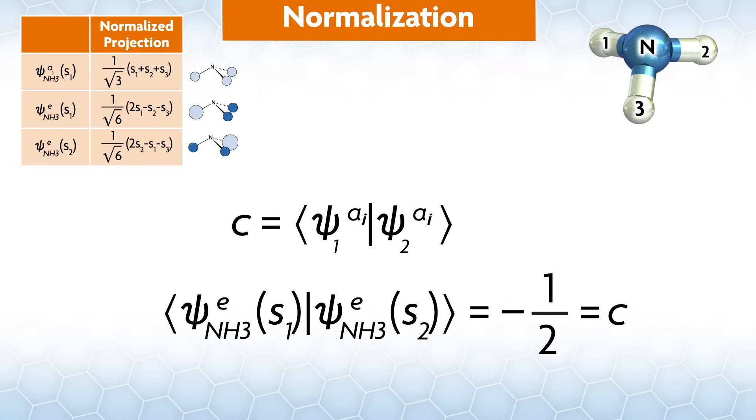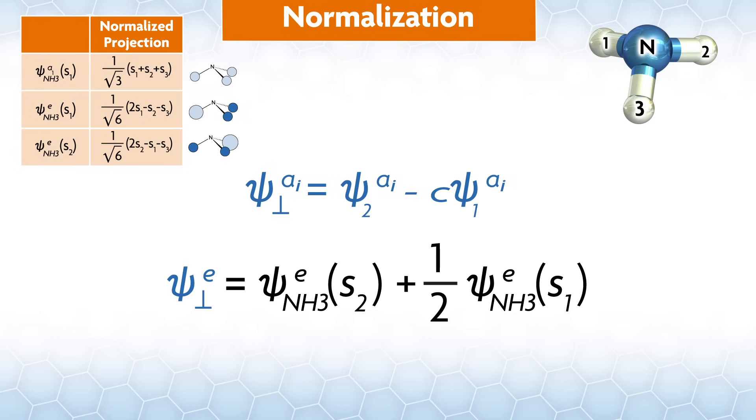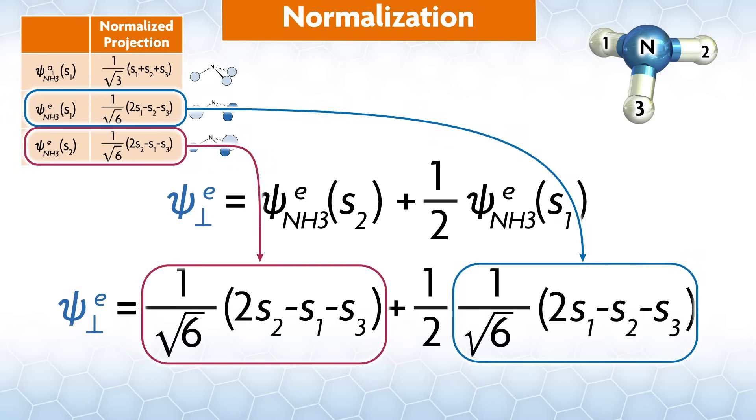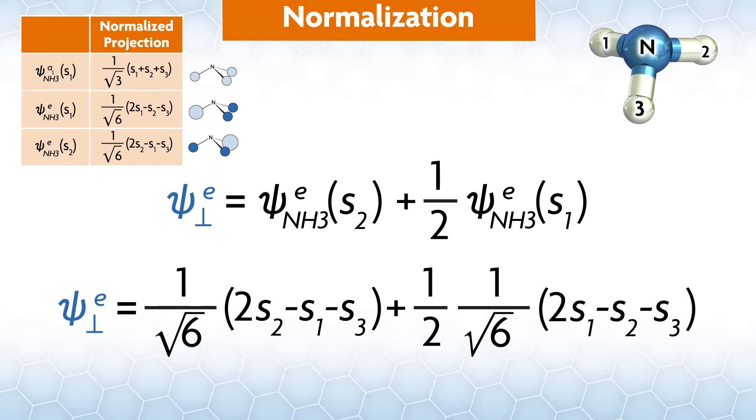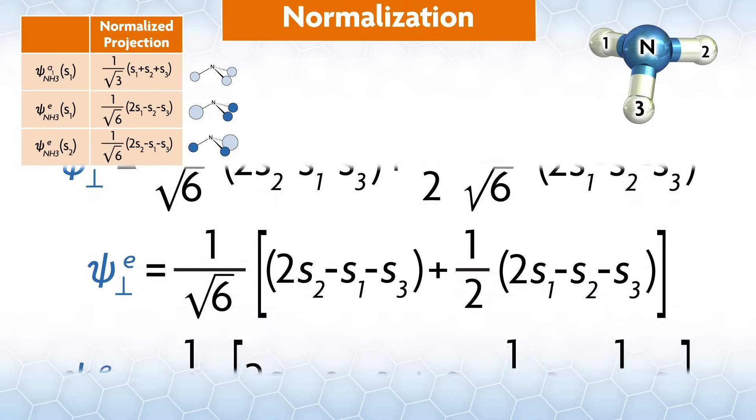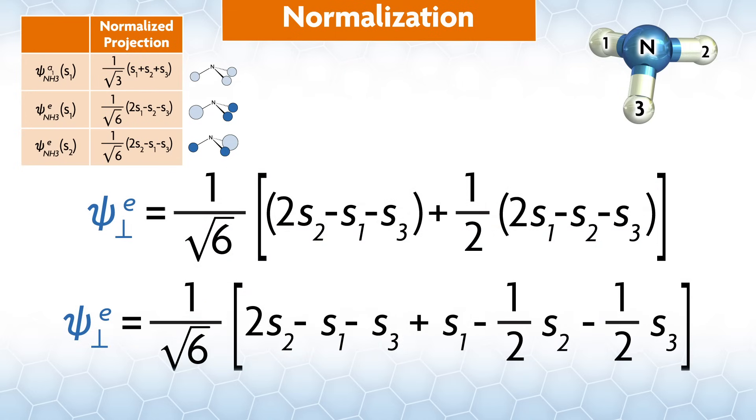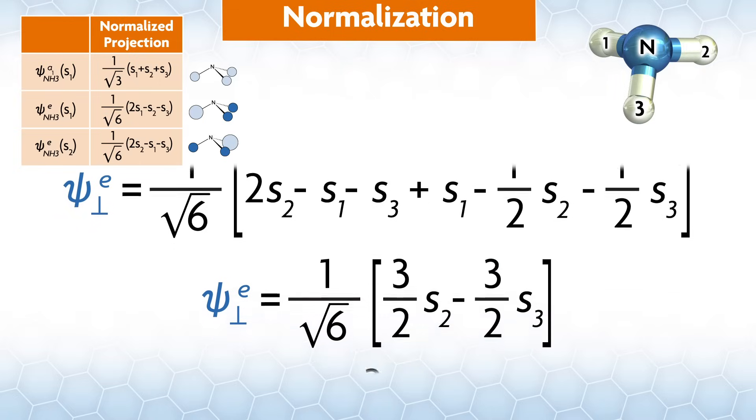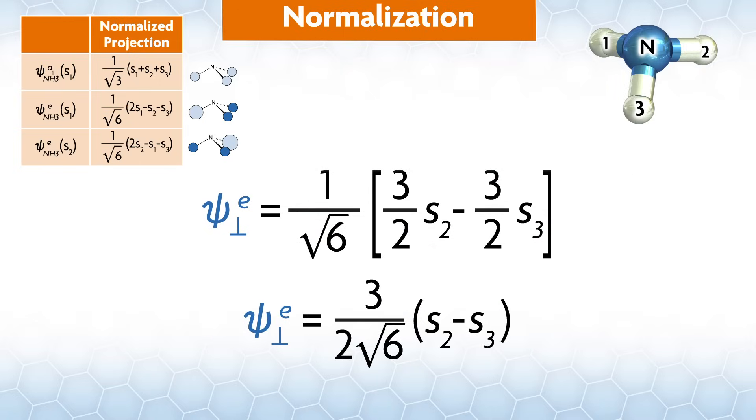To find an orbital that is orthogonal to psiES1, our Gram-Schmidt orthogonalization equation is this. The c equals negative one-half gets inserted, and it's negative, so the second term is now positive. Now, we put the form of psiES1 and psiES2 into the equation. Let's make this a little easier by pulling out the common one over square root of six in both terms and then simplify. The function needs to be renormalized after all of this. The constant term will just disappear when we do the renormalization. So, let's drop it and normalize this.